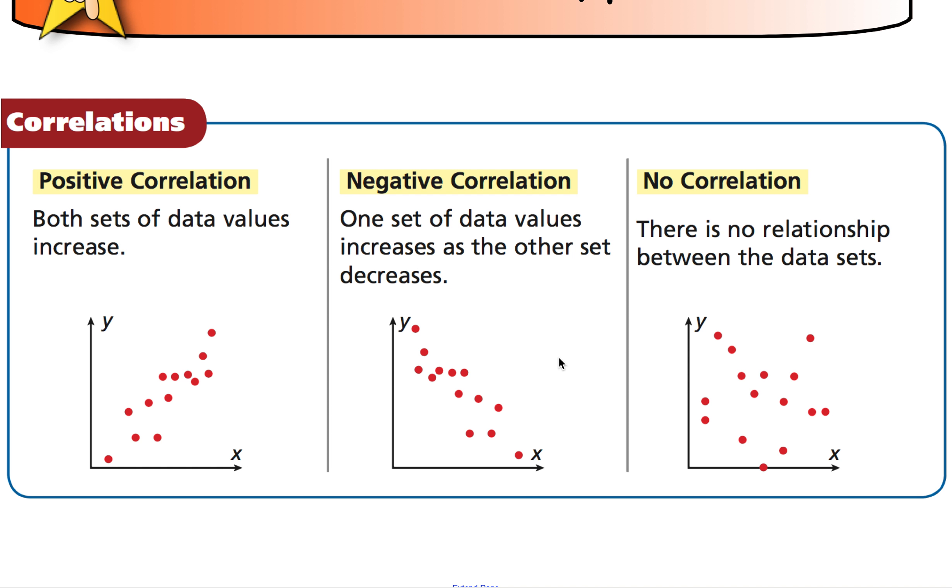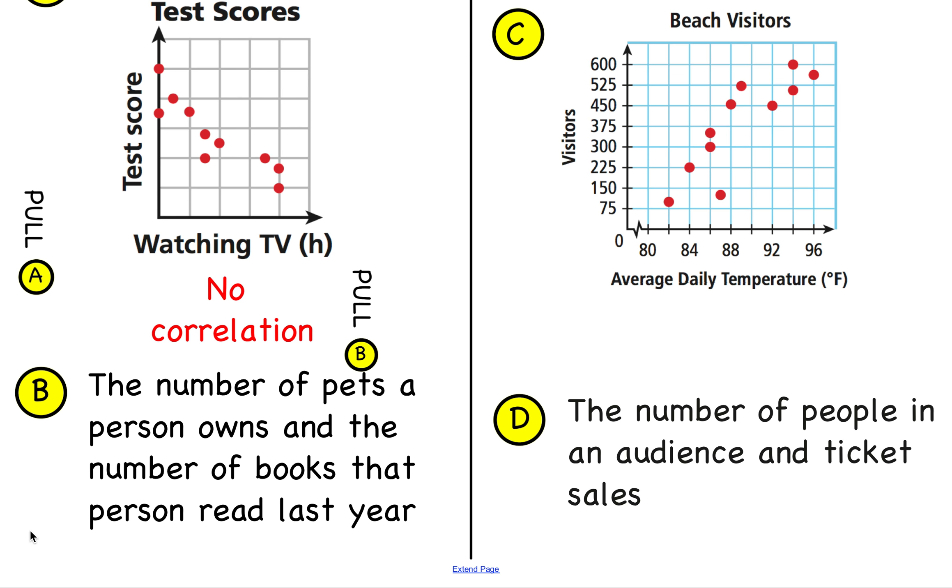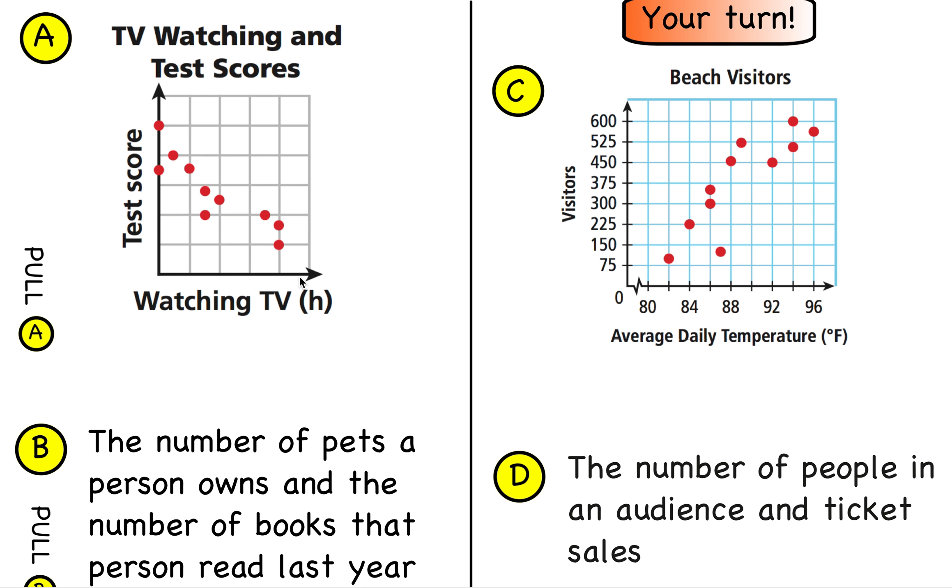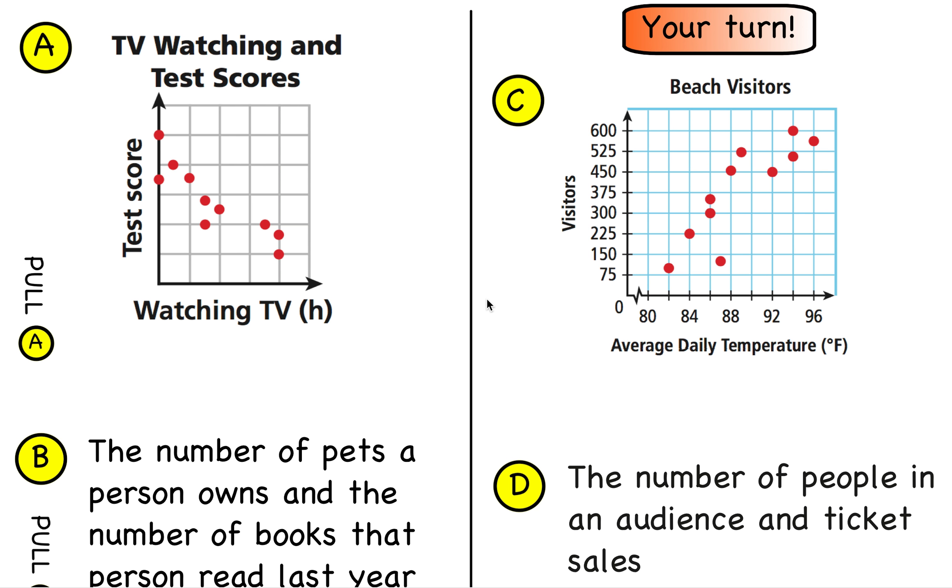And then letter B says the number of pets a person owns and the number of books that that person read last year. What kind of a correlation do you think that would be? Well, I don't think there would be any relationship. I think if we were to get data on that, there would be no correlation. So those are two examples of describing the type of correlation. There are two on the right-hand side, letters C and D, that you can do on your own and bring your answers to class.